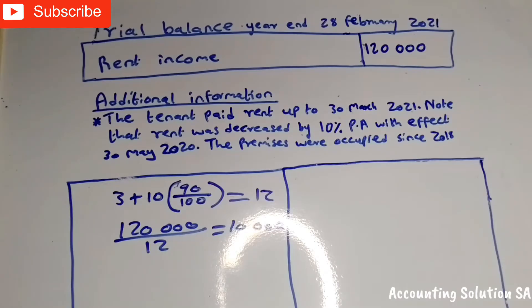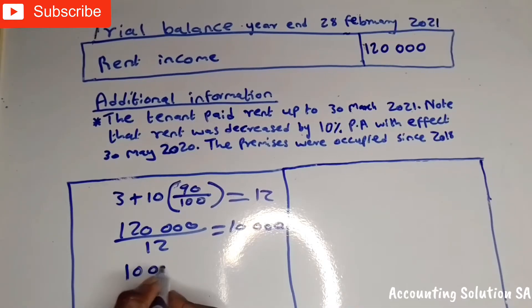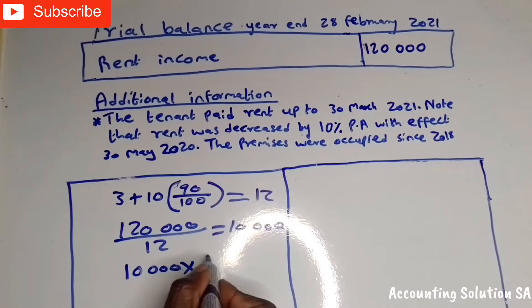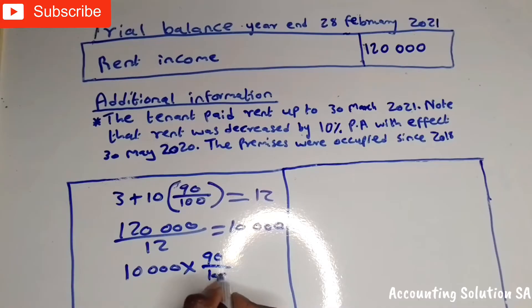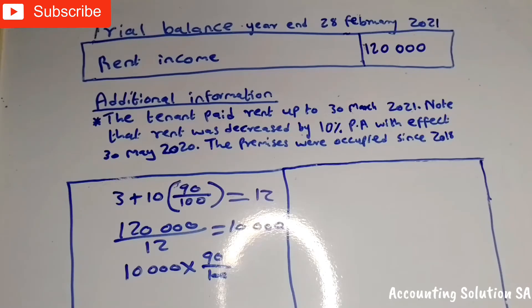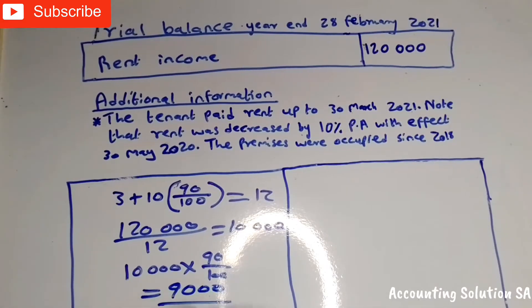Remember, they said from May the rent decreased, which means the amount for March 2021 was affected by the decrease. Now on the final answer, we take R10,000 and decrease it by 10%, so we multiply by 90 over 100. Alternatively, calculate 10% of R10,000 and subtract it from R10,000, which gives you R9,000. This is the amount you record on your income statement.